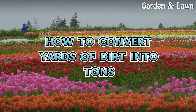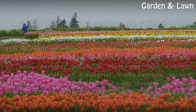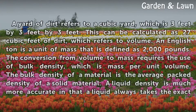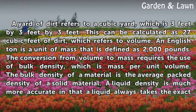How to Convert Yards of Dirt into Tons. A yard of dirt refers to a cubic yard, which is 3 feet by 3 feet by 3 feet. This can be calculated as 27 cubic feet of dirt, which refers to volume.